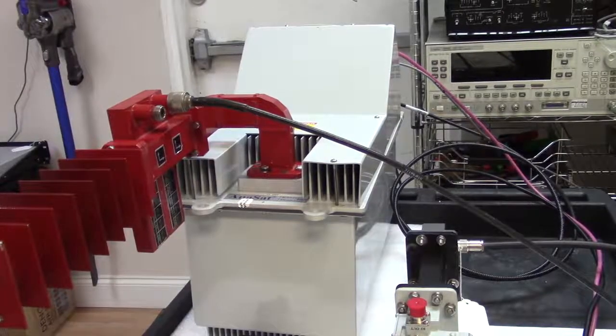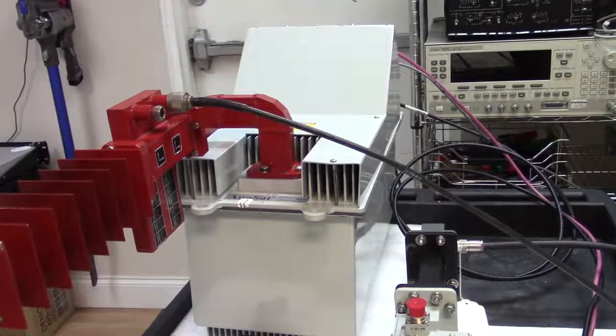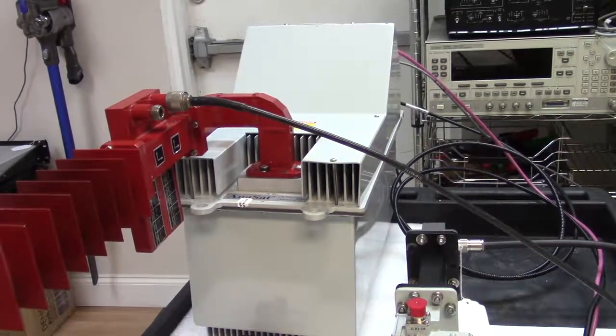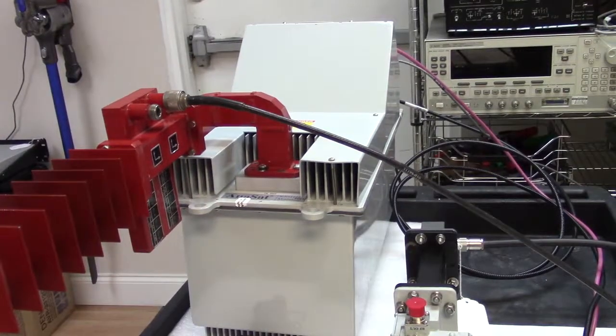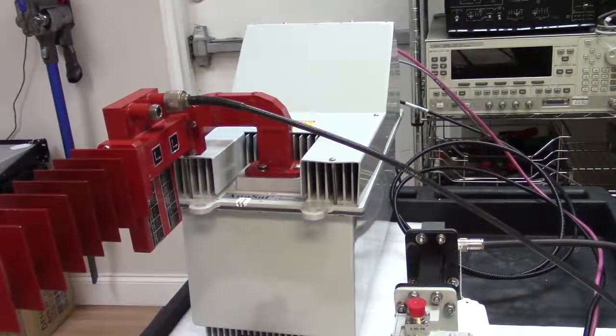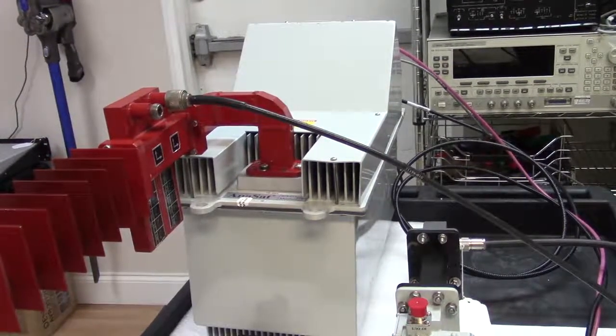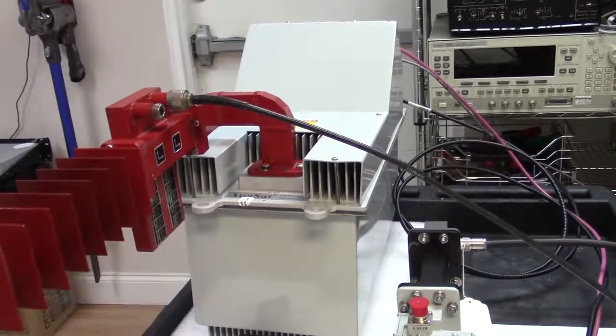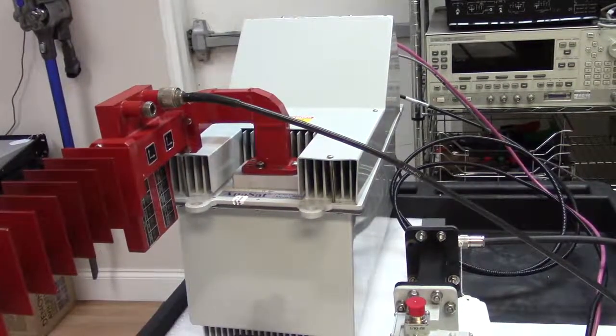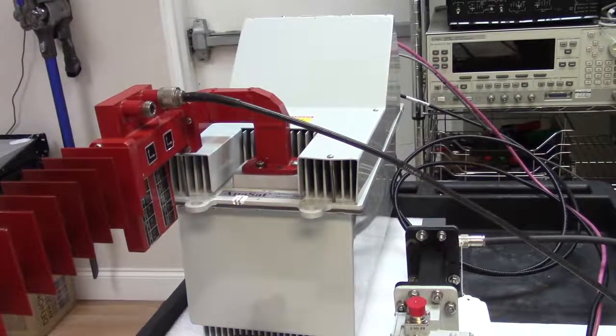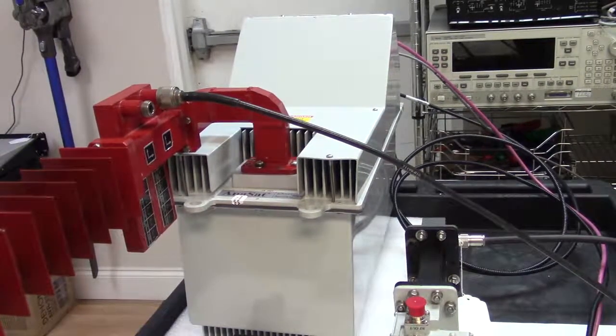I've removed that elegant little waveguide to N-type adapter and in its place I've put a dummy load with a couple of monitor ports because I want to monitor the output on the spectrum analyzer and also on the power meter so that I can verify that this transceiver is transmitting at the right frequency and I can also see the output level of the transceiver.